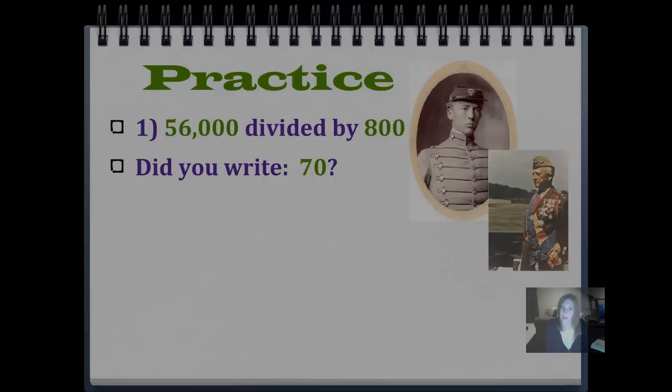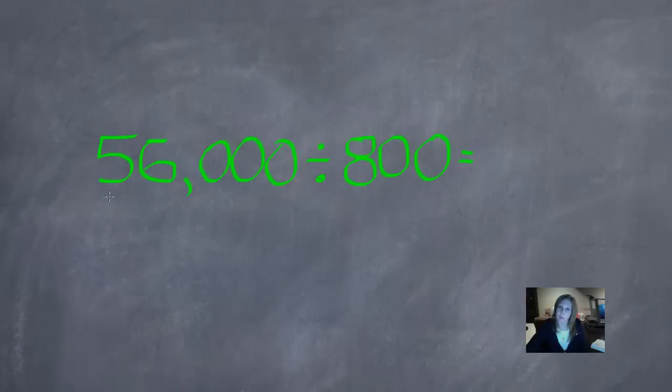Did you write 70? Let's see how you did that. So here is our problem written out mental math style. We're going to underline our non-zero digits, which are our royalty. So those guys we're going to divide first. 56 divided by 8 is 7 because 7 times 8 is 56. And then our soldiers are going to go to battle against each other. This guy is going to capture this guy, and this guy is going to capture this guy, and there's only one guy left to be knighted that didn't get captured. So we are going to write him over here with the royal family. So our answer is 70.